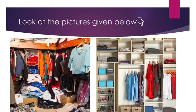Before we start the chapter, I want to ask you a question. As you can see, there are two closets in the given picture. If I ask you to find something from the closets, which closet will be easy to use? I think your answer will be the closet on the right-hand side. It is because that closet is well organized — the t-shirts, shirts, and trousers are placed properly, the shoes are arranged in racks, and hankies are arranged in boxes.